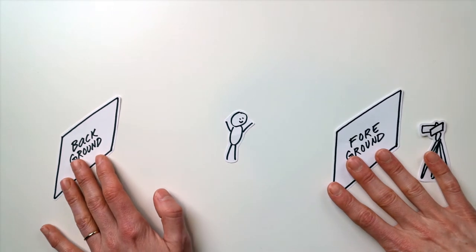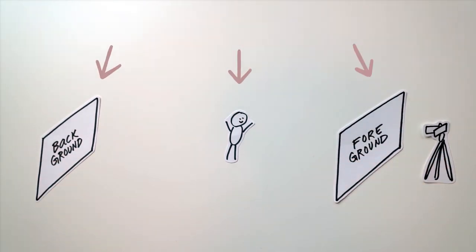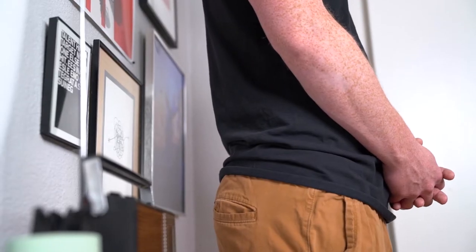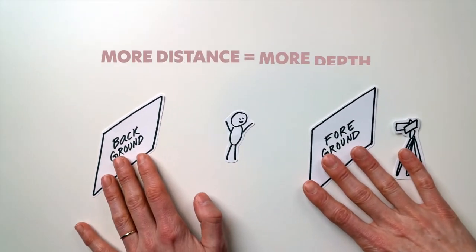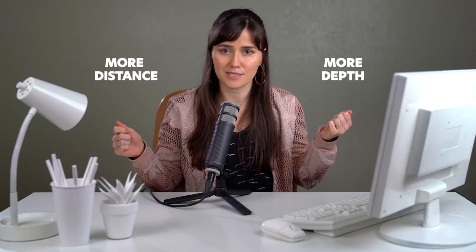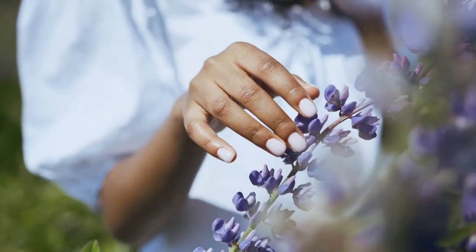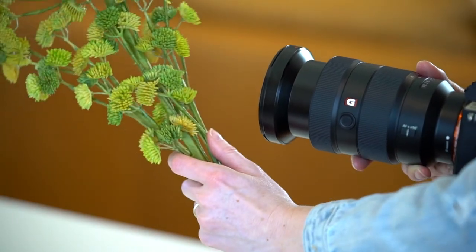Another way to add depth is by controlling the distance between your subject and the background and foreground. If I put Miles right up against this wall so there's very little distance between him and the background, then both he and the background will be in focus. But the farther I move him away from the wall, the blurrier the wall gets, and that creates depth and makes him pop against the background. More distance equals more depth. You can also use the foreground to create depth by having something blurry close to the lens and your subject in focus behind that. If I can't find a foreground object naturally, I'll just create one by holding something up to the lens. So you have lots of ways to control the foreground and background and add depth to your shots.